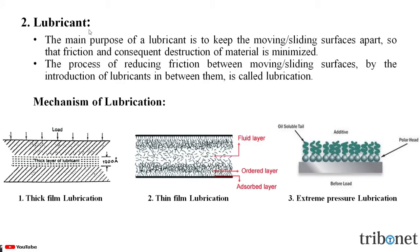Next, let us understand what is a lubricant. The main purpose of a lubricant is to keep the moving surfaces apart so that friction and consequent destruction of material is minimized. This lubrication takes place mainly by three mechanisms: thick film lubrication, thin film lubrication, and extreme pressure lubrication. In the first one, thick film lubrication, the moving surfaces are separated from each other by a thick film of fluid so that direct surface-to-surface contact and welding of junctions rarely occurs.